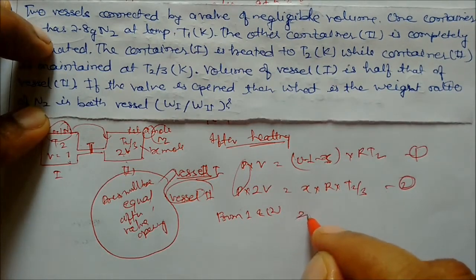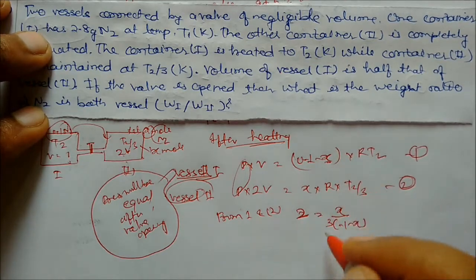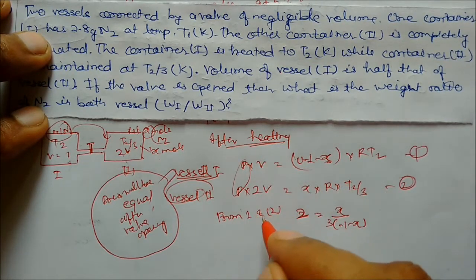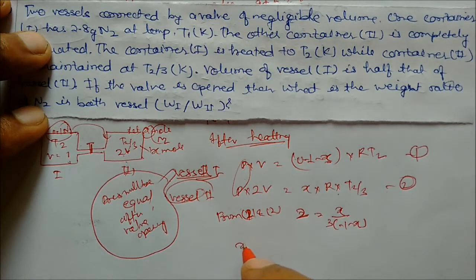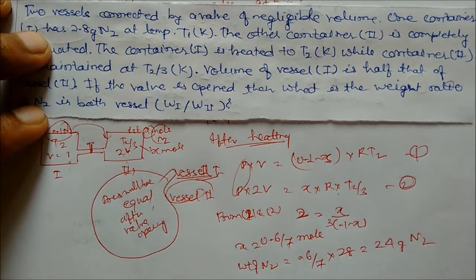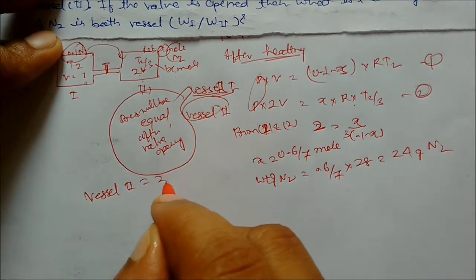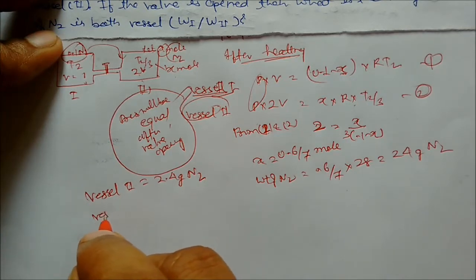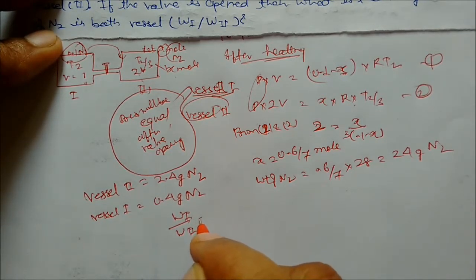From equations one and two, dividing: we get 2 = x / (3 × (0.1 − x)). Solving, x = 0.6/7 moles. Weight of nitrogen transferred = (0.6/7) × 28 = 2.4 grams in vessel two. Vessel one contains 2.8 − 2.4 = 0.4 grams of nitrogen. So weight ratio of vessel one to vessel two = 0.4 / 2.4 = 1 : 6.